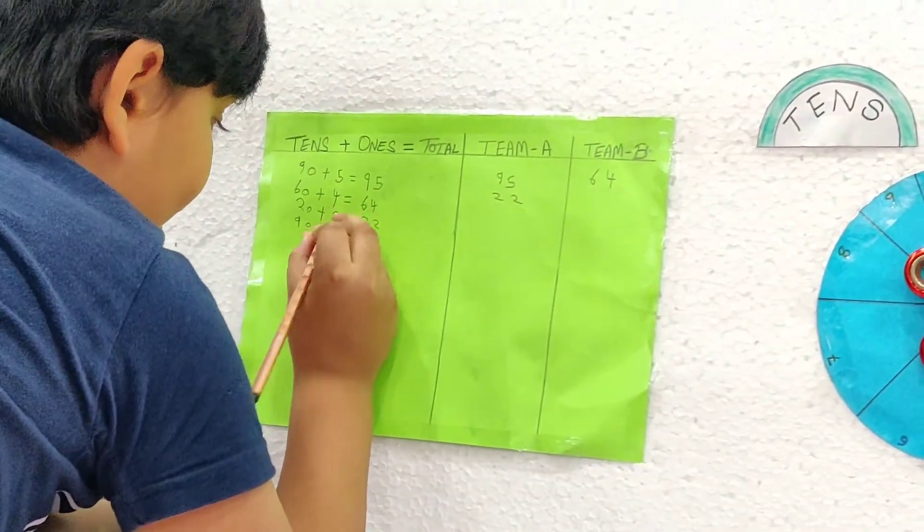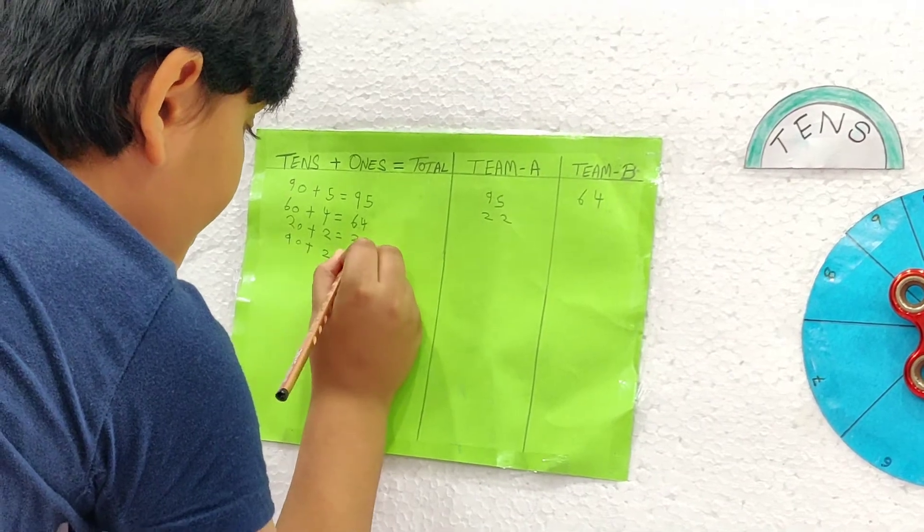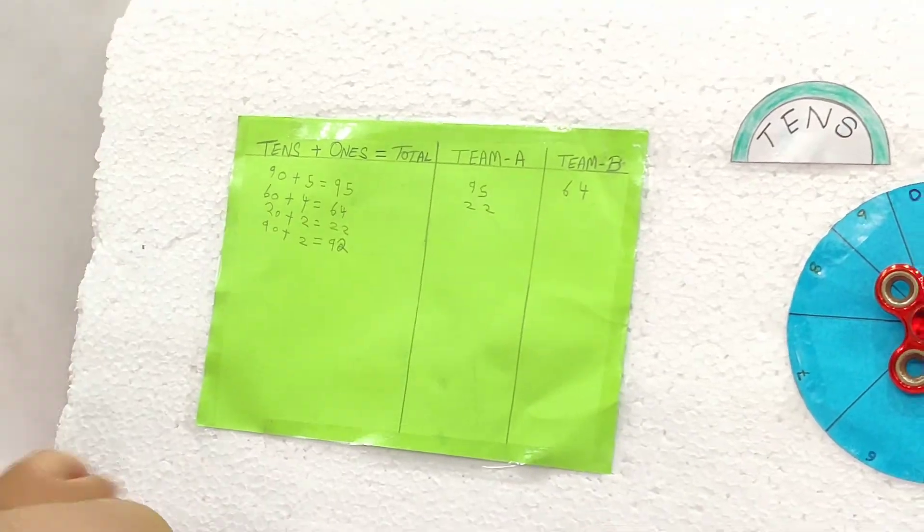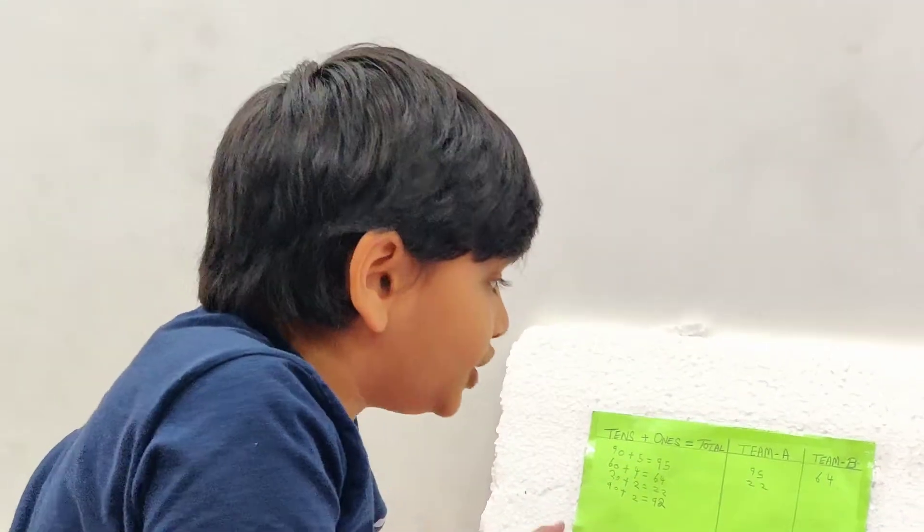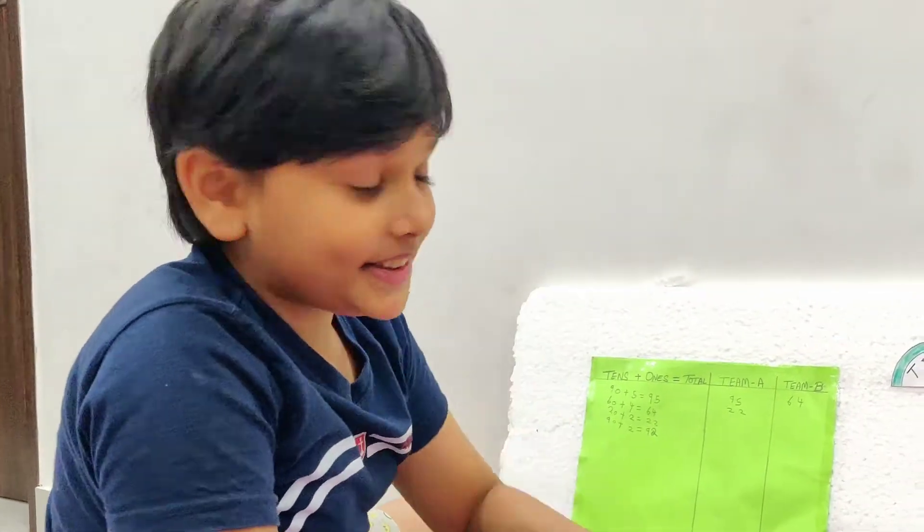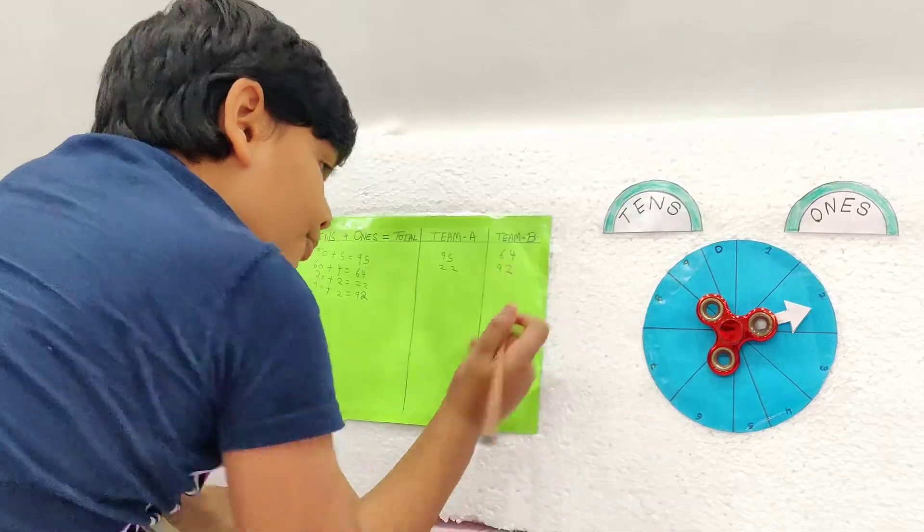This time it is 2. So 90 plus 2, it is 92. This time B team got 92 points.